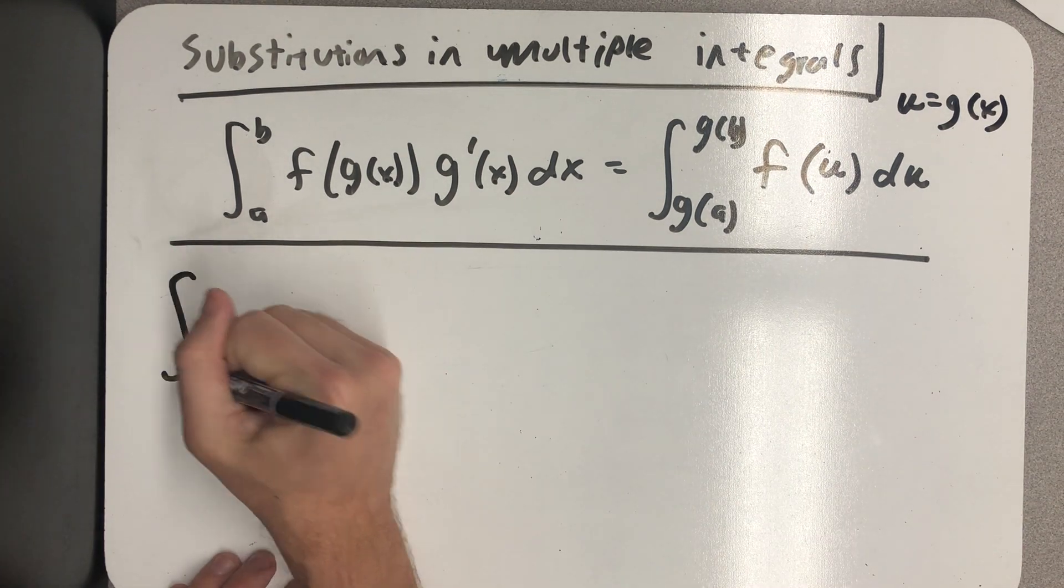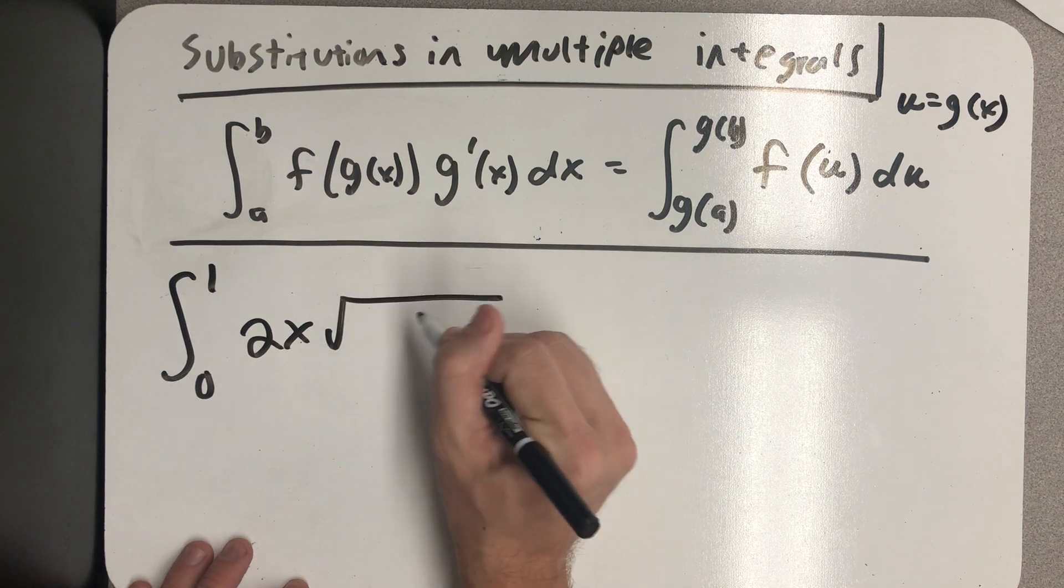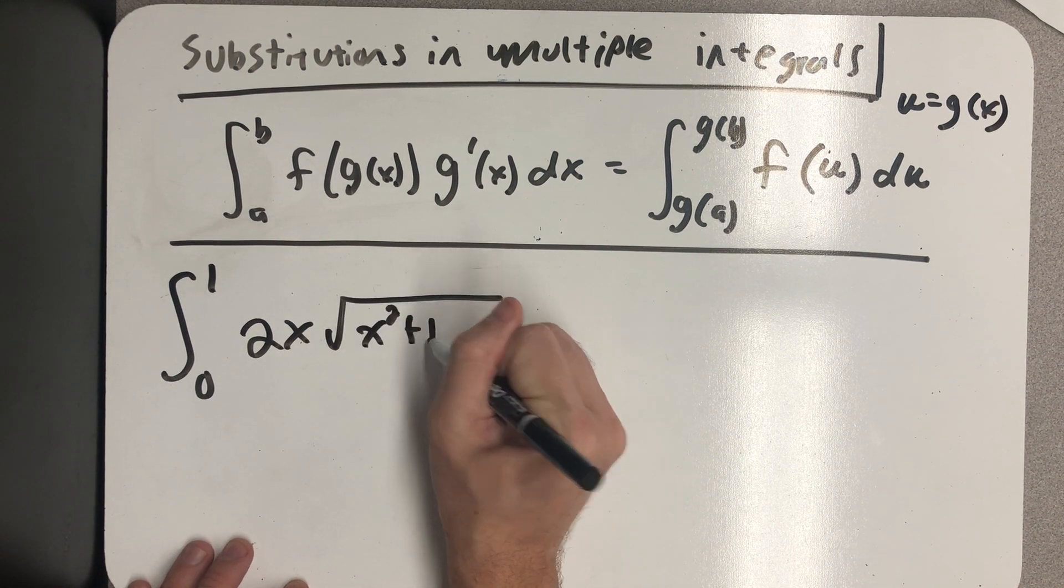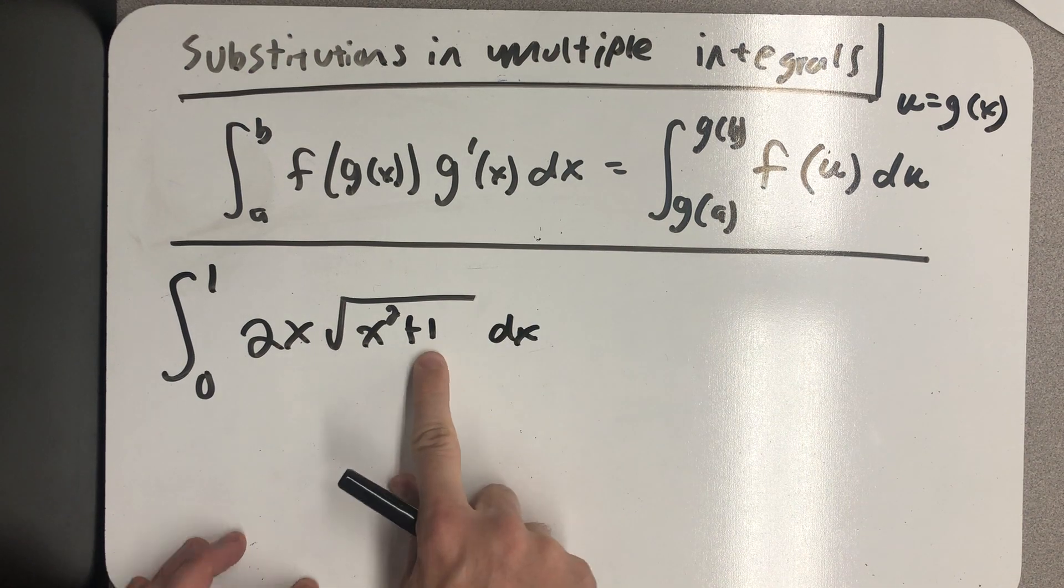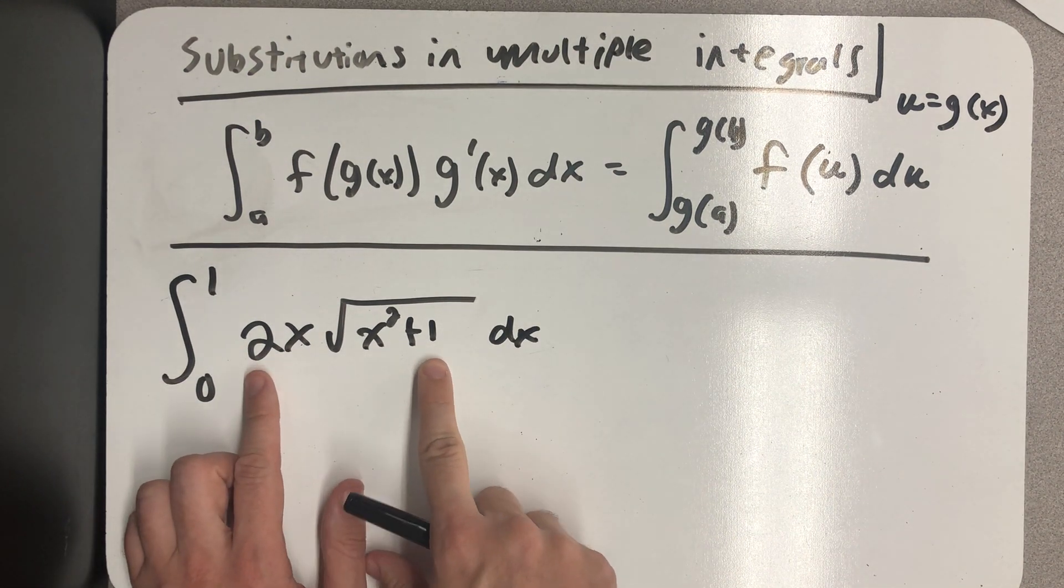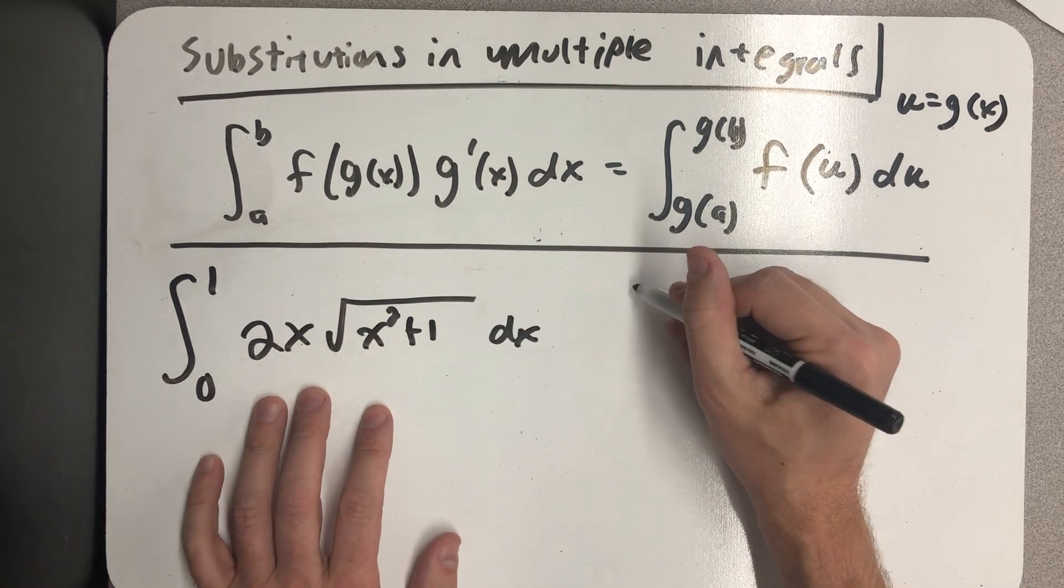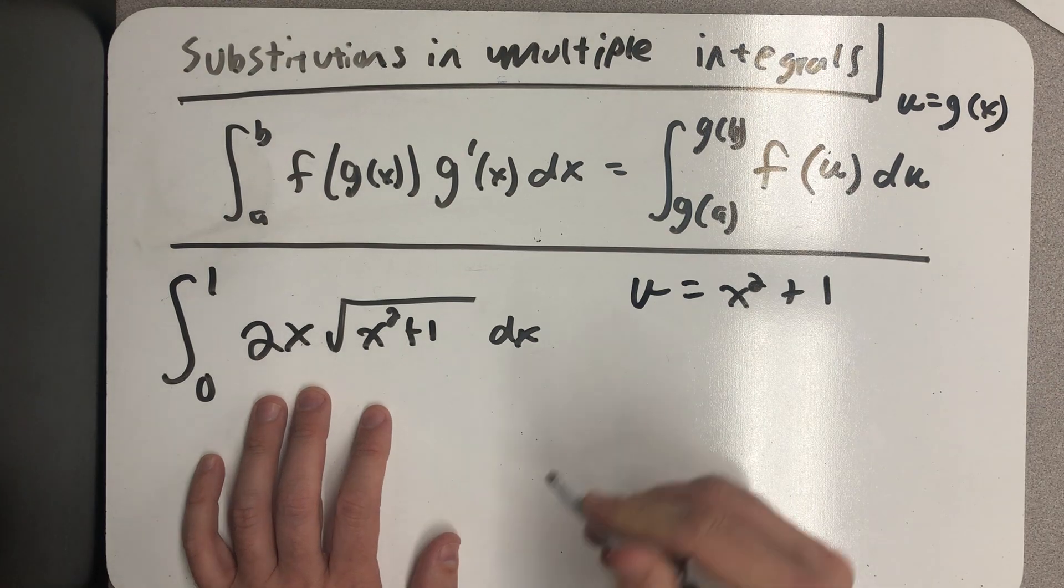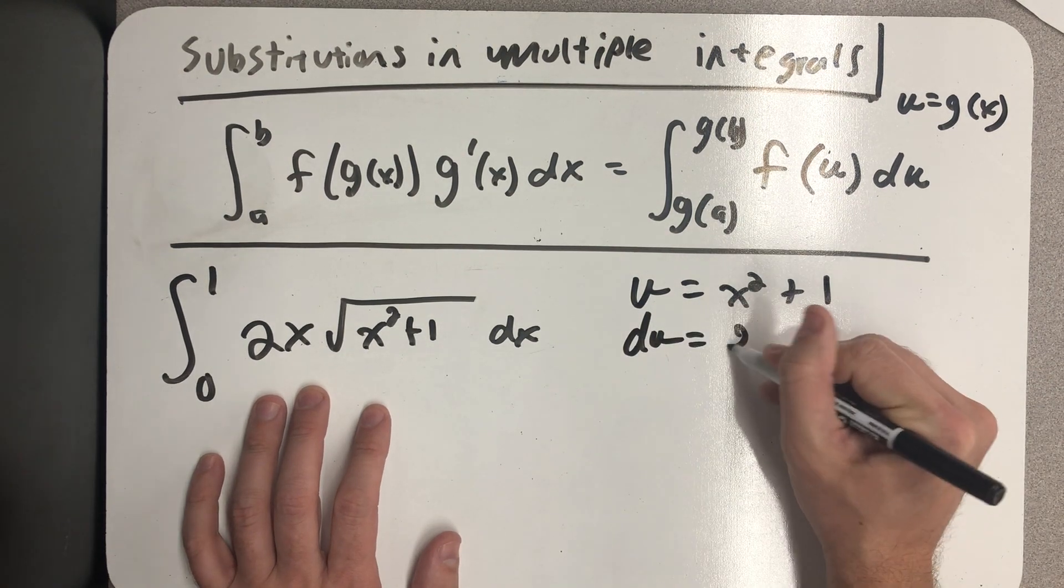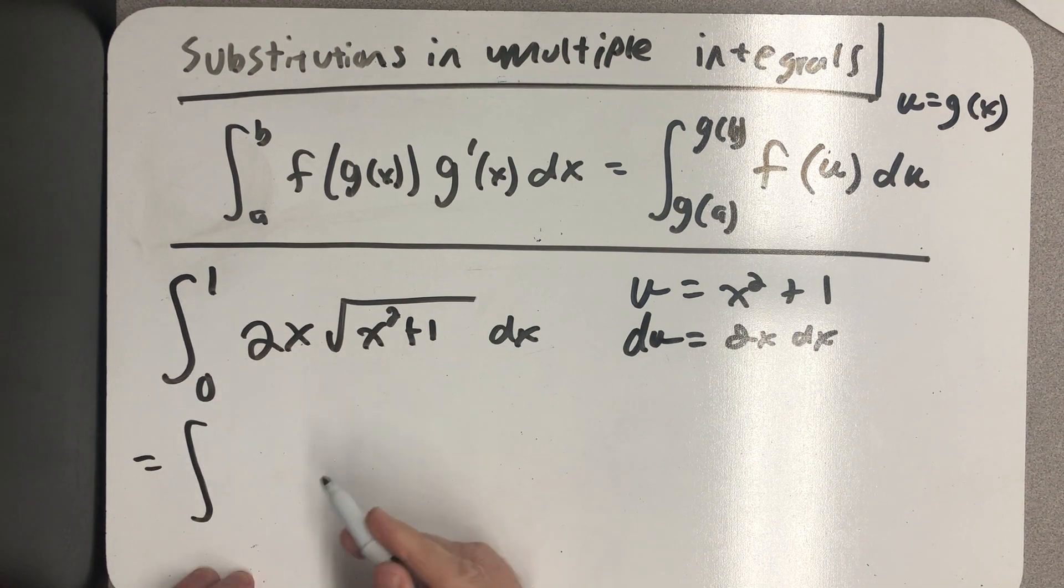Usually after you see that rule, you do a problem that looks like this one, where you very clearly see an inside function whose derivative just happens to be sitting right there, multiplied by its derivative. So you say u is x squared plus 1, du is then 2x dx.